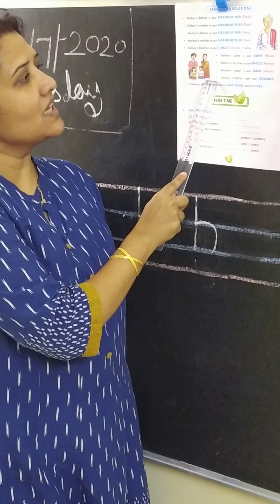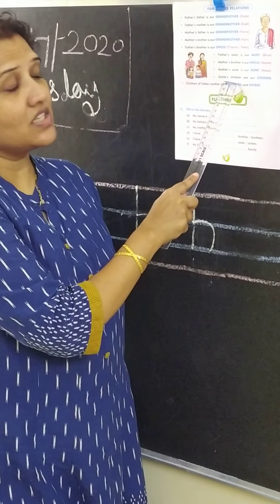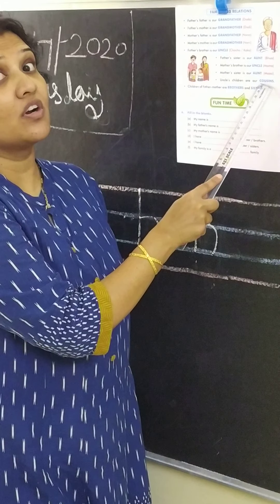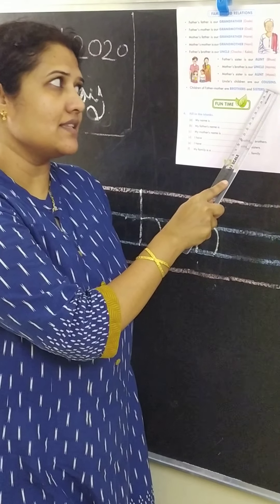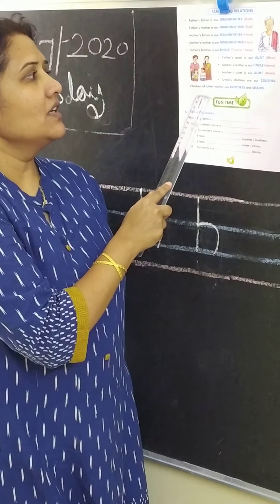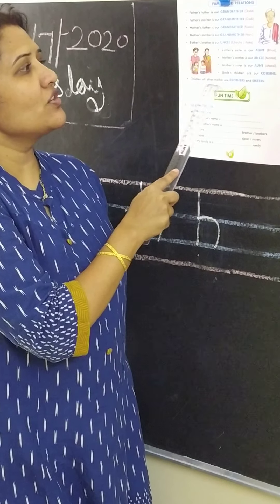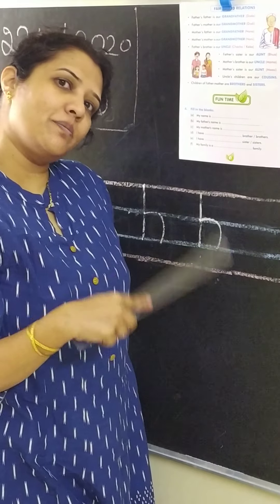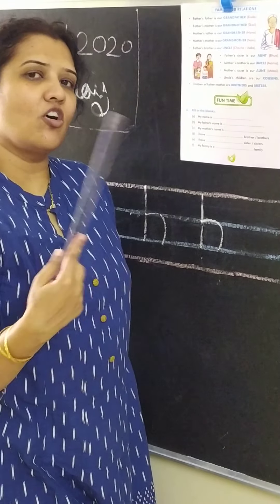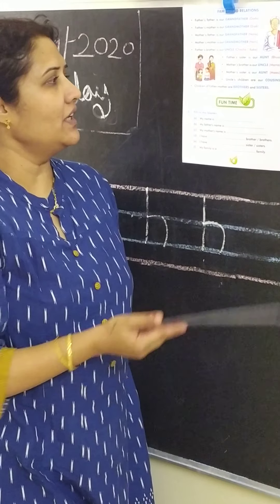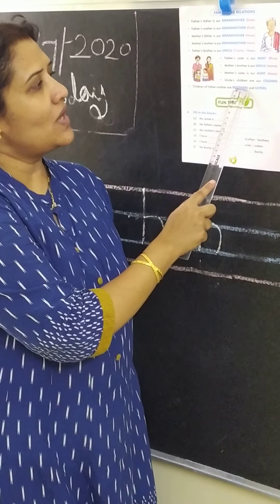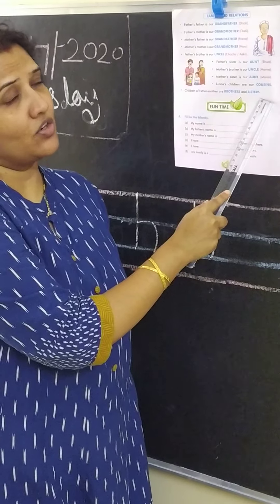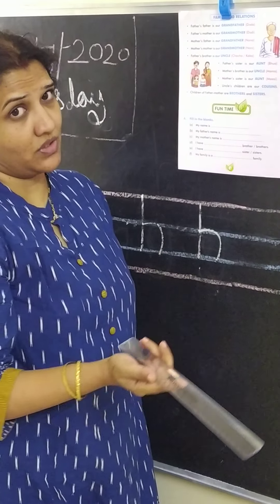Now who are the uncle and aunt's children? What do you call them? They are your cousins. And the children of father and mother — that is you and your brother or your sister. So you either have a brother or a sister, or you can have both.